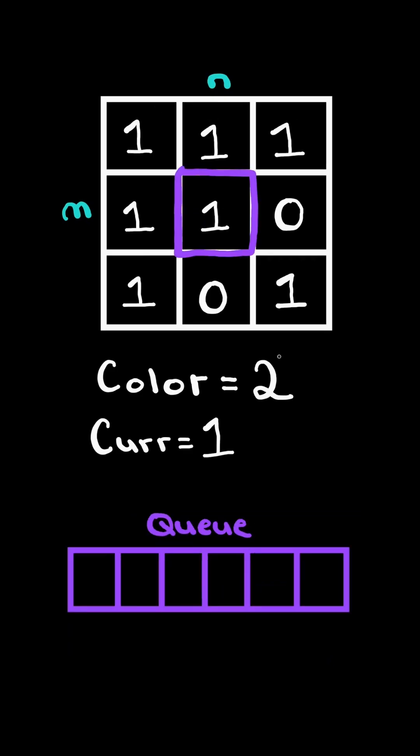First, we will initialize a queue and an empty set. We append the starting position 1,1 to the queue and add the position to the set. The set is to keep track of all of the positions we have seen thus far.